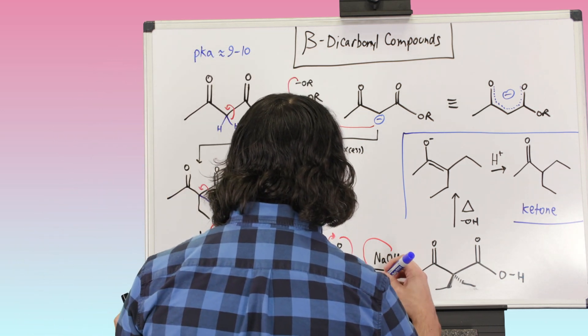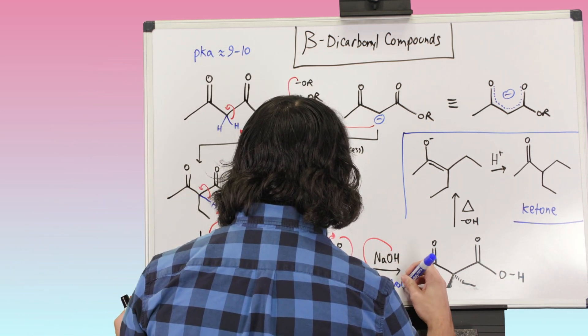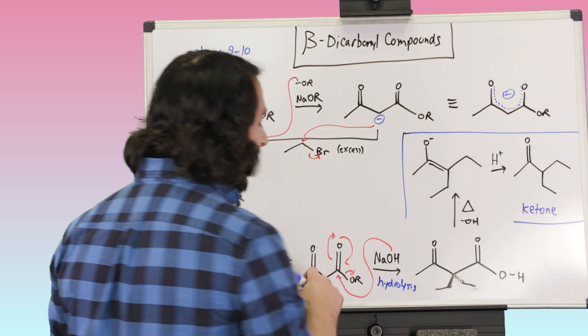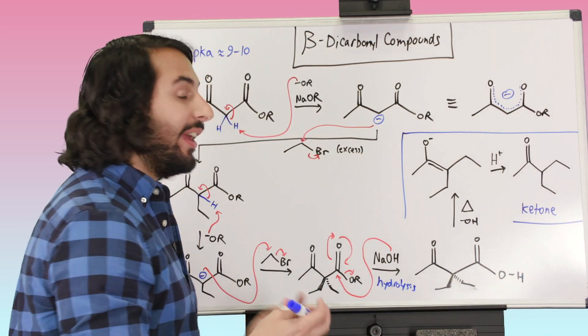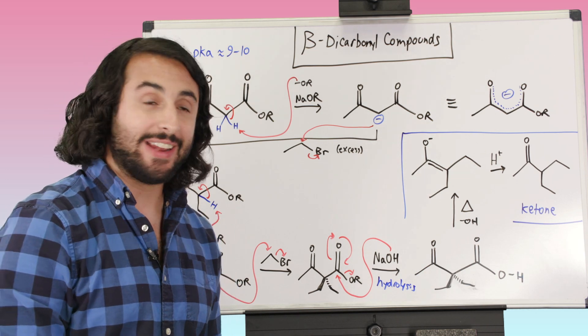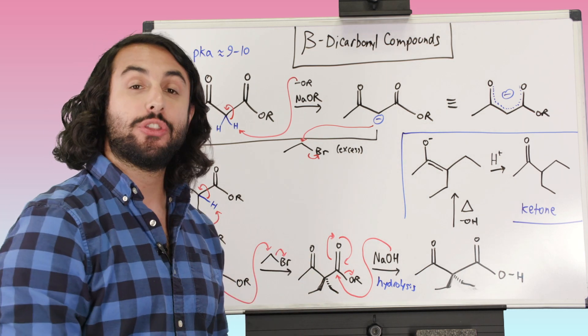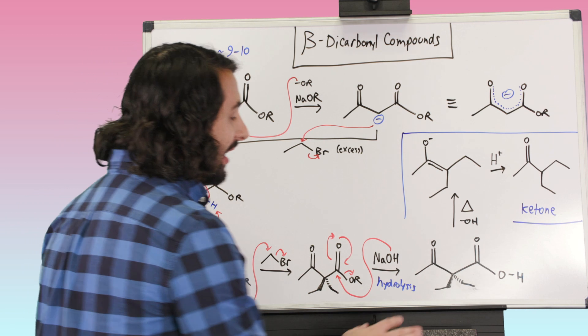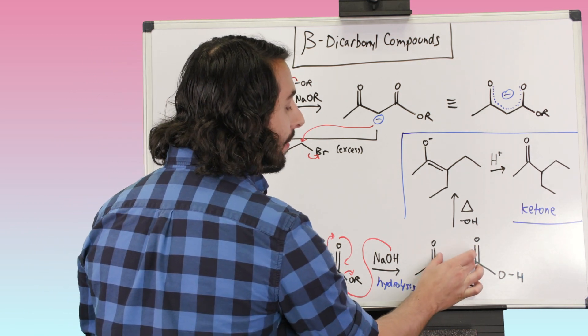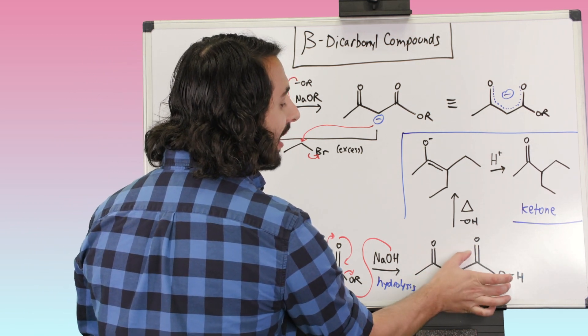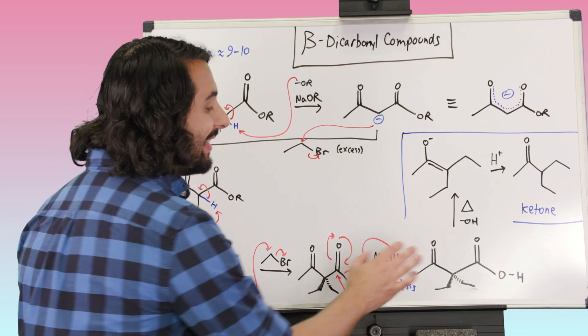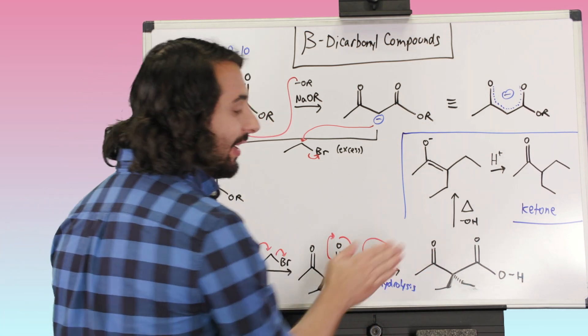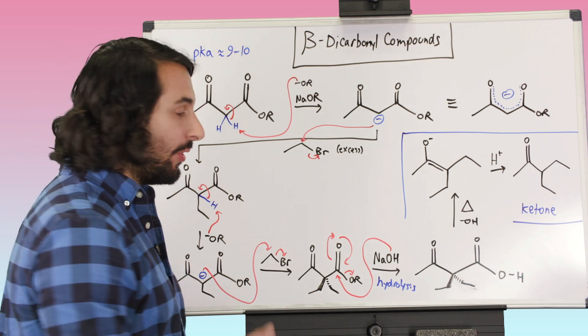So that was hydrolysis. We have hydrolyzed that ester. Now we have OH right there. And now we are actually primed for something that's very interesting. Now we want to point out that the only reason this is possible is because we have a beta dicarbonyl situation. We have a carboxylic acid that is beta to a ketone, and we need that relationship. If this carbonyl was not here, this would not be possible, and here's why.